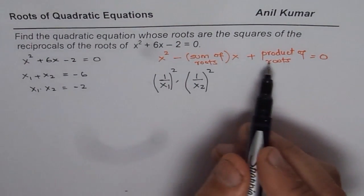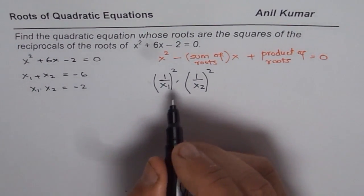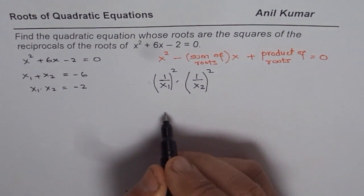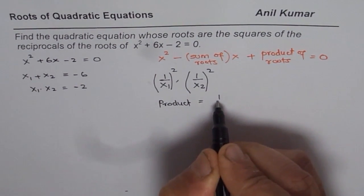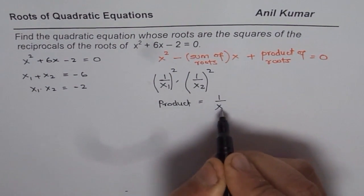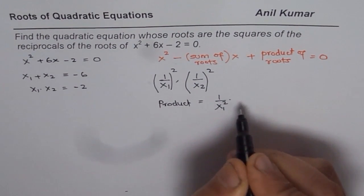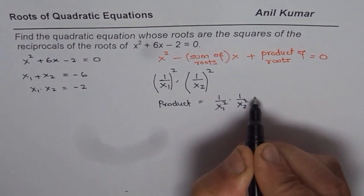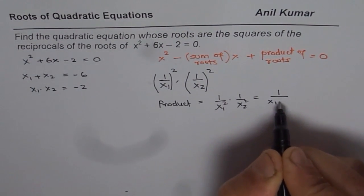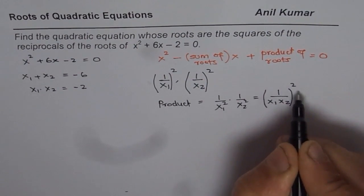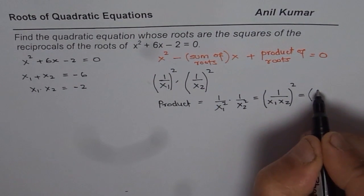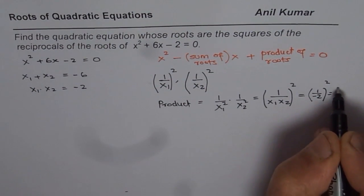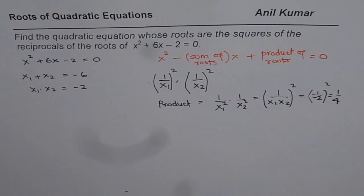The product is simpler. If we multiply the two new roots, we get 1 over x1 squared times 1 over x2 squared, which equals 1 over (x1·x2) whole squared. We know x1 times x2 is minus 2, so this becomes 1 over (minus 2) squared, which is 1 over 4. So the product of the new roots is 1 over 4.